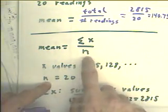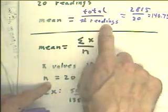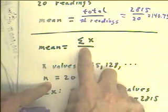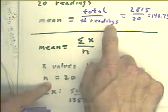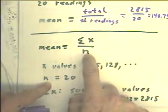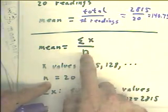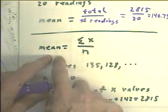N equals 20. N stands for the number of whatever it is you're averaging. So the sum of x really stands for your total. The n in this example was the number of readings. In general, it's the number of things that you have to add up to get your total. And that's how we get the mean.